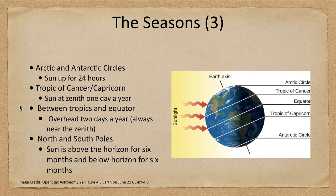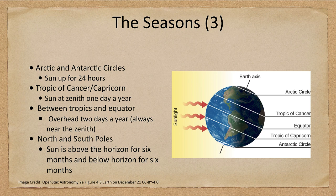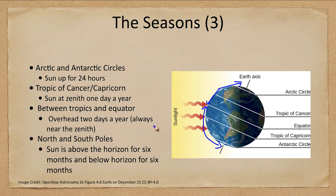Looking at the same thing six months later, we see that the Earth is tilted the other direction. Now the northern hemisphere is receiving less direct sunlight and has shorter days, while the southern hemisphere is receiving more direct sunlight and has longer days. So that gives us our opposite seasons, which we know to be the case, and therefore helps confirm why the tilt of the Earth causes the seasons.